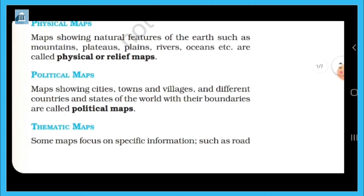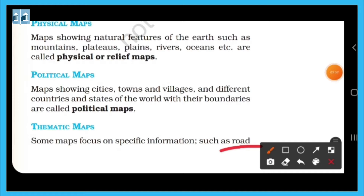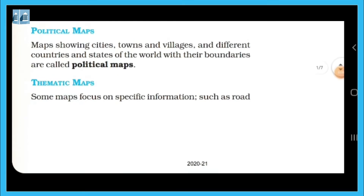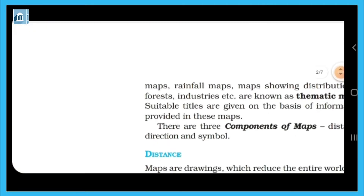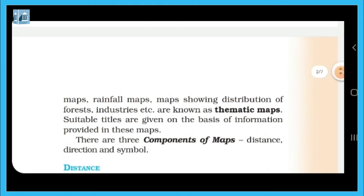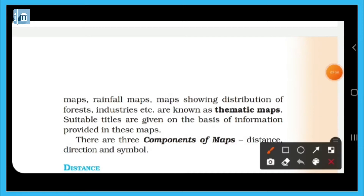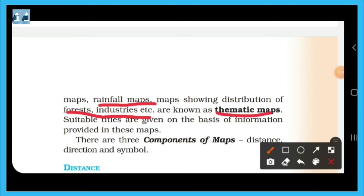Now, thematic maps. In thematic maps, information about road maps, rainfall maps, distribution of forests, and industries are all shown.